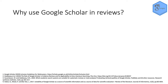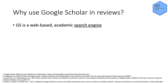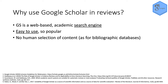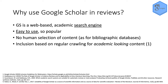Google Scholar is useful as a resource in evidence synthesis and meta-analyses because it's a web-based academic search engine that's free to use. It's also very easy to use, which is why it's so popular. There's no human selection of the content, so unlike bibliographic databases, any information that looks like academic content is included and is regularly crawled from the internet, making it more up-to-date than many bibliographic databases because it doesn't require manual inclusion.